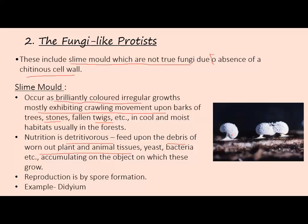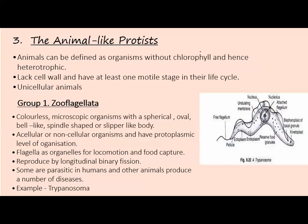Now let's talk about animal-like protists. These are heterotrophs — organisms without chlorophyll that cannot make their own food. They lack a cell wall and have at least one motile stage in their life cycle. They are unicellular eukaryotic organisms.